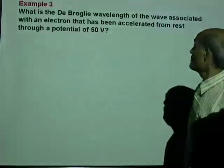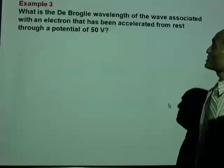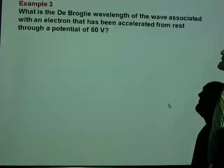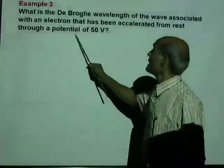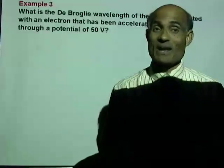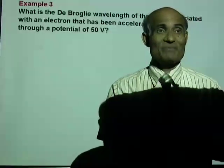What is the de Broglie wavelength of the wave associated with an electron that has been accelerated from rest through a potential of 50 volts? Well, I have not given you the velocity of the electron. Is it possible to find the velocity from here?